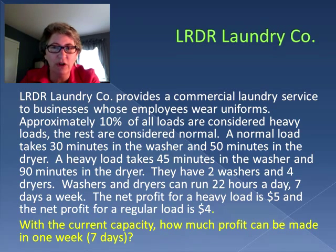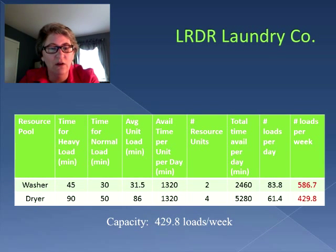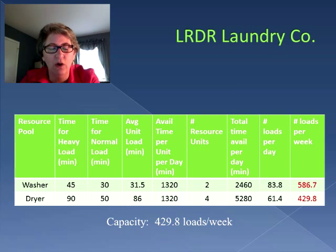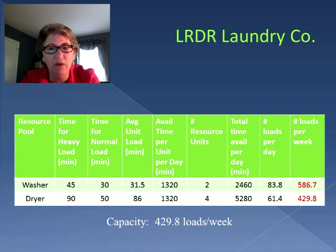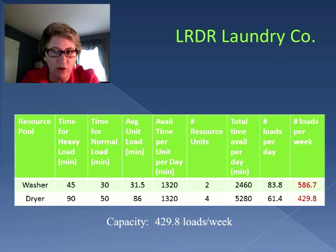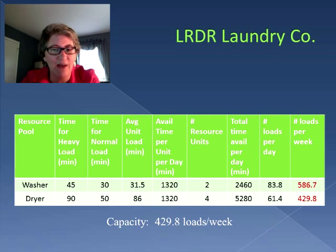So let's take a look at our capacity analysis. Just like before, we calculated how many loads per week can get done. Between the washer and the dryer, we calculated how many loads each resource pool could manage. The washer, even though there are only two, was able to get 586.7 loads done in a week, but the dryer could only get 429.8. So our capacity is 429.8 loads per week.